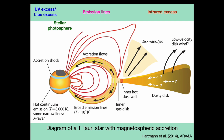Young stellar objects are composed of a pre-main sequence star surrounded by an accretion disk. The star's magnetic field is strong enough that accreting material flows along the field lines when falling onto the star. This scenario is known as the magnetospheric accretion model. In this model, extra luminosity associated with accretion is produced by hotspots where accreting material impacts the surface of the star. However, other aspects of this complex system may contribute to different types of variability.